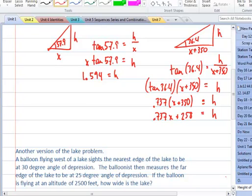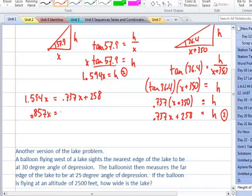Okay, so we're back and all I did was I figured that the tangent of 57.9 was 1.594 and the tangent of 36.4 degrees was 0.737. So I distributed that and I have my two equations for the height. I'm going to set them equal. So I'm going to have 1.594X is equal to 0.737X plus 258. And then I'm going to subtract 1.594. I'm going to take away from that 0.737 as we were doing in class. And we had 0.857X equals 258.